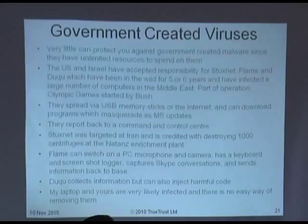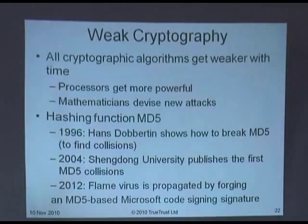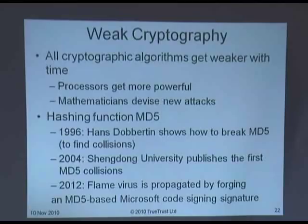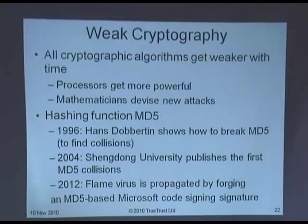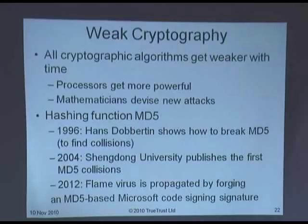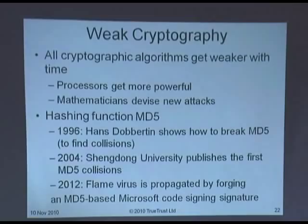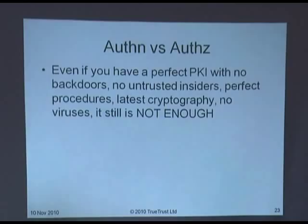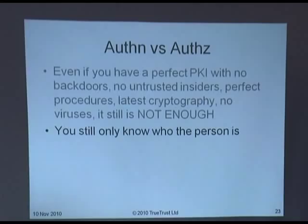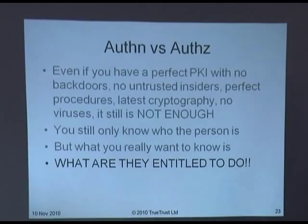All cryptographic algorithms get weaker with time as processors get more powerful and mathematicians devise new attacks. Microsoft's code-signing certificate uses an MD5 hash, so the Flame virus propagated by forging an MD5-based Microsoft code-signed certificate — your computer can't tell it isn't real. This is the problem with weak cryptography. No one should use MD5, but people still do. Finally, even with a perfect PKI — no backdoors, no untrusted CAs, perfect procedures, latest cryptography — it's still not enough, because PKI only tells you who the person is. What you really want to know is what they're entitled to do. You need an authorization infrastructure as well.